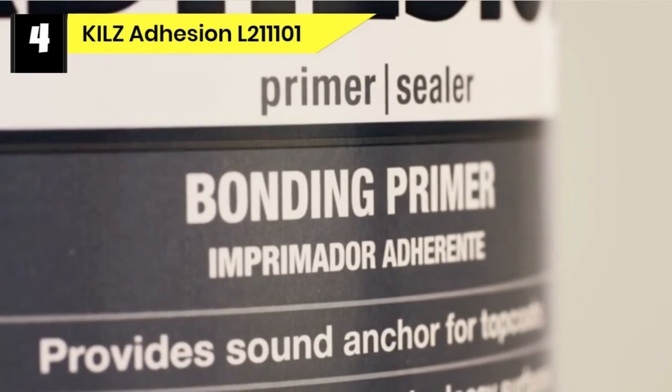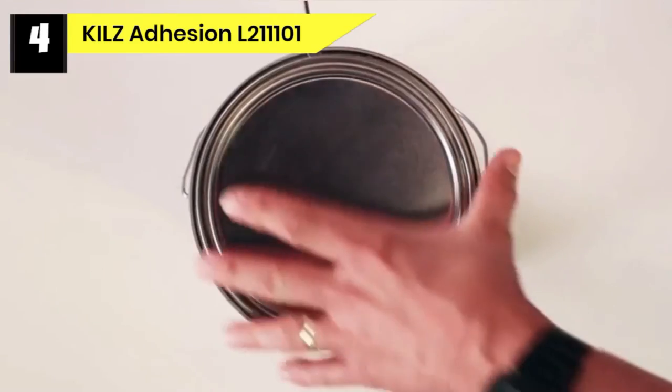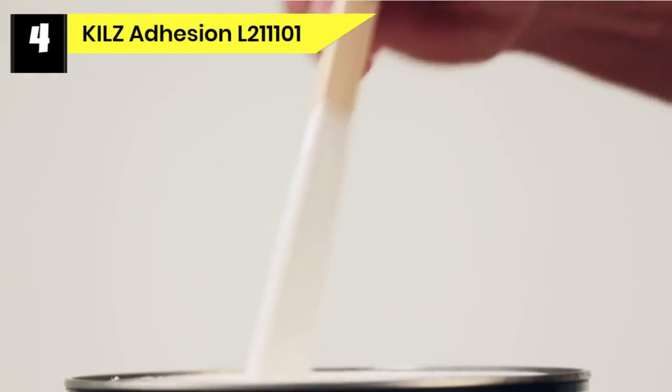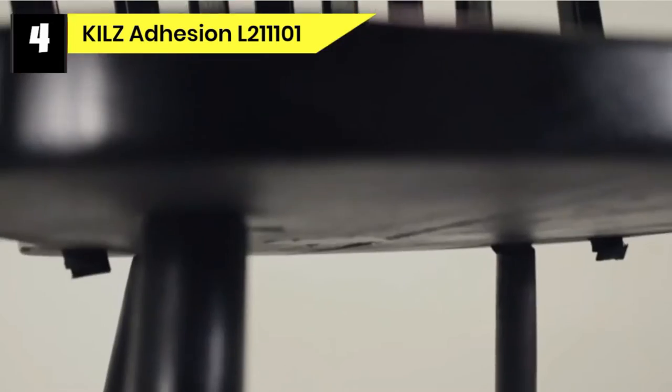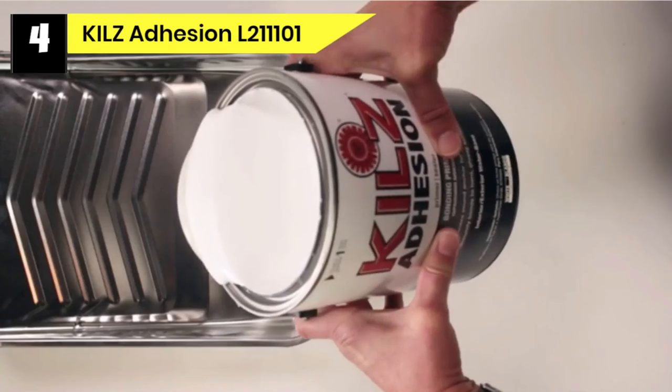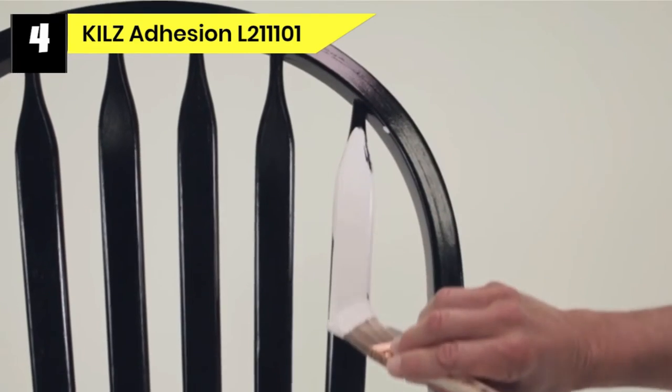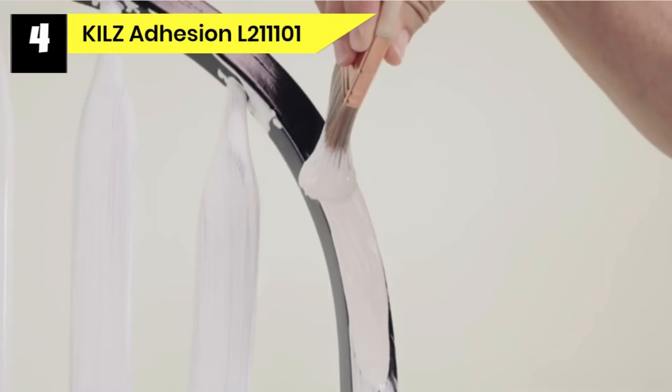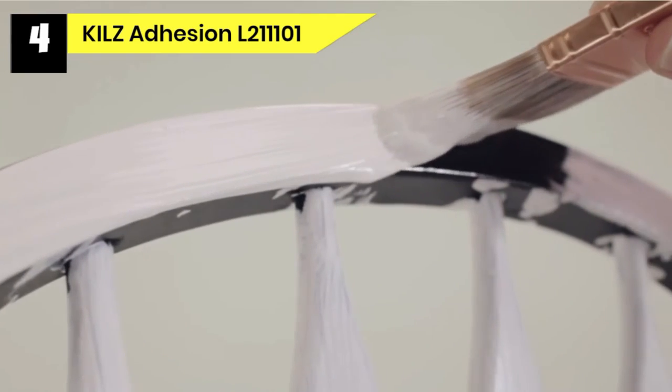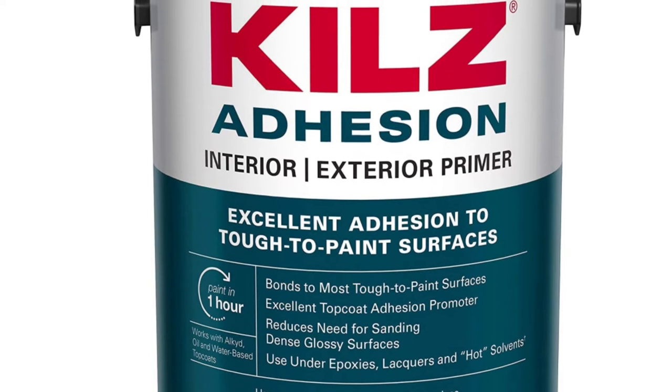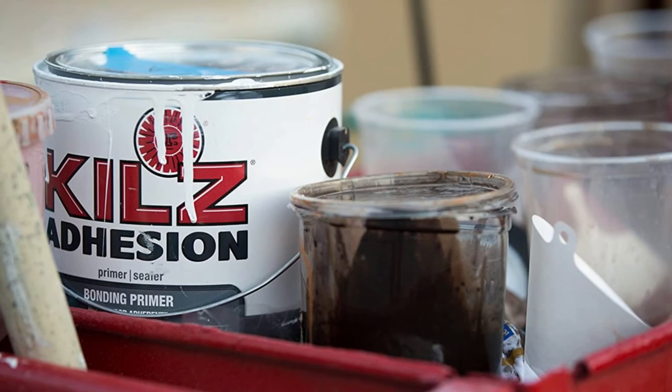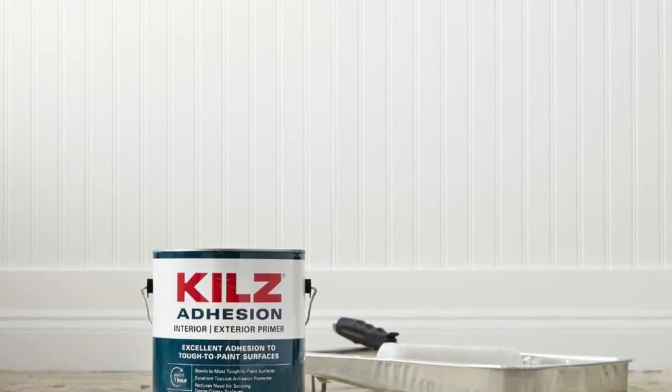Number 4: KILZ Adhesion L211101 Exterior Primer Paint. Porous surfaces are very difficult to deal with, which is why you need to look for wood primers with superior adhesion properties. This is why the KILZ Adhesion High Bonding Latex Primer is such a great choice for old, porous wood. This product is highly versatile, as it doubles as both interior/exterior paint primer. It also has a smooth formula that prevents bleeding. The KILZ Adhesion can cover as much as 300 square feet per gallon. It may not seem like much, but unlike the Rust-Oleum Zinsser Bulls Eye Primer, you will likely not need the second coat.